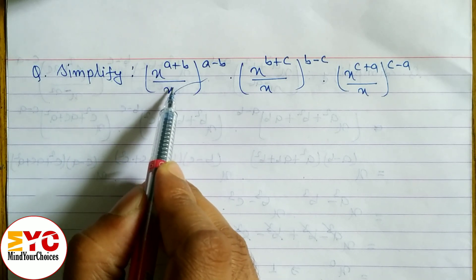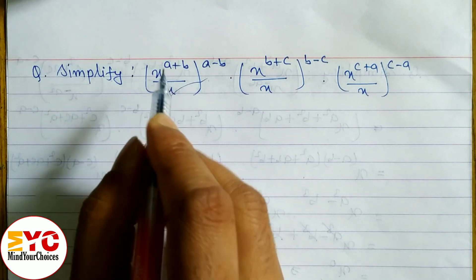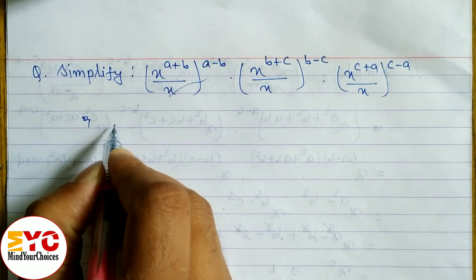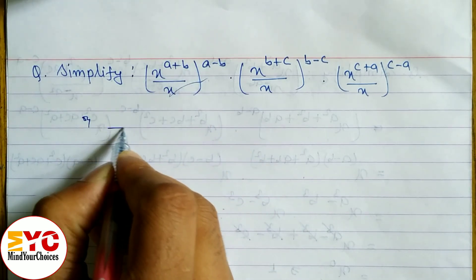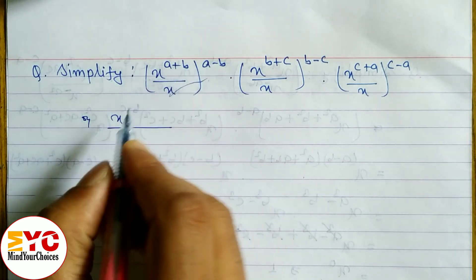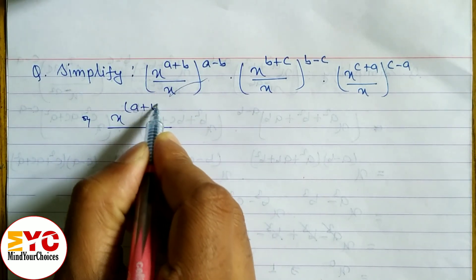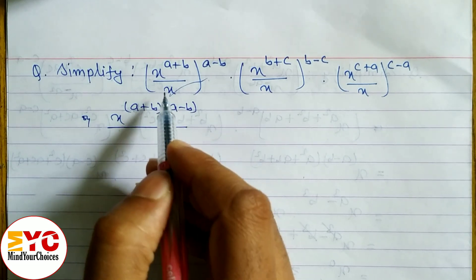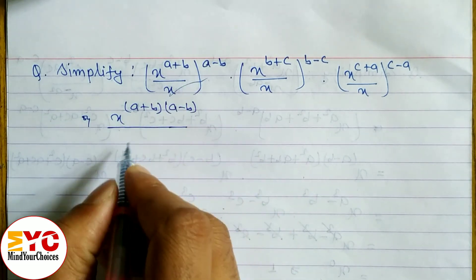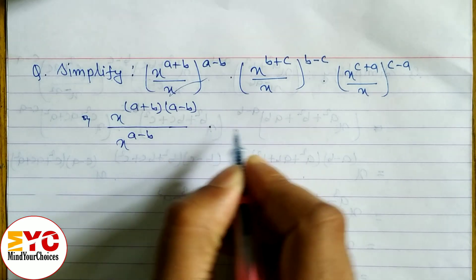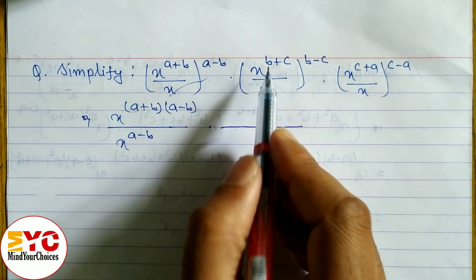If there is nothing in the power then it is one, but here we don't do it like that. First of all, we have to multiply the powers using the power rule. So we write x to the power (a+b)(a-b), and similarly in the denominator also we write x to the power (a-b).